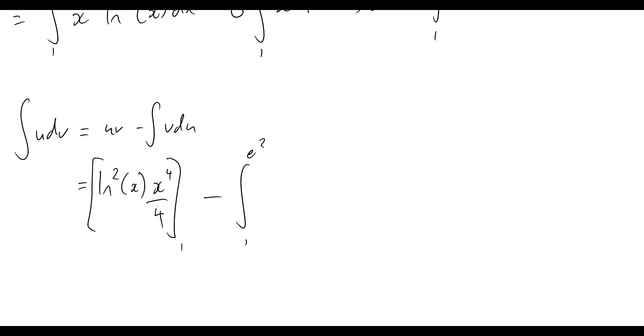And I should also note that we need to be evaluating this again from 1 to e squared. So integral now, so v du, well, that will bring this whole section to simply be x to the 4 on 4 times by natural log of x, and there'll be a factor of 2 at the front of that, over x.